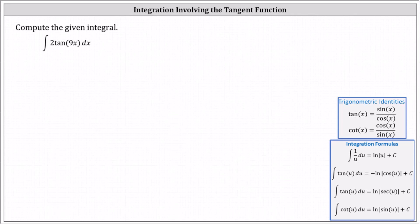Looking at the integration formulas below, notice there are two integral formulas for tangent u. We have the integral of tangent u du equals negative natural log absolute value of cosine u plus c. And we also have the integral of tangent u du equals natural log absolute value of secant u plus c. These two antiderivatives are equivalent. I'll begin by using this first formula.